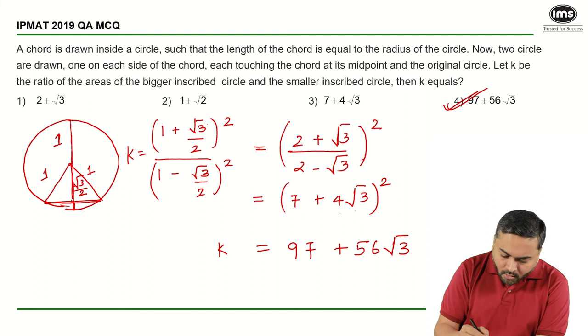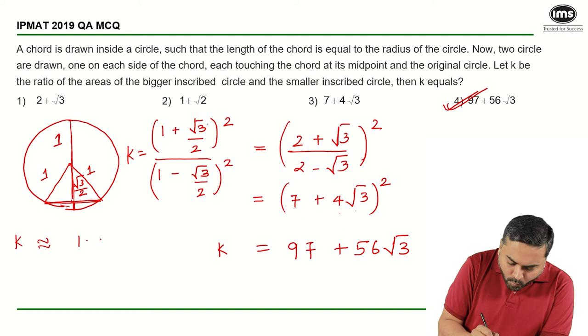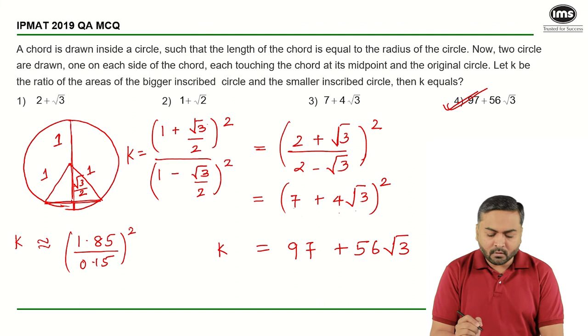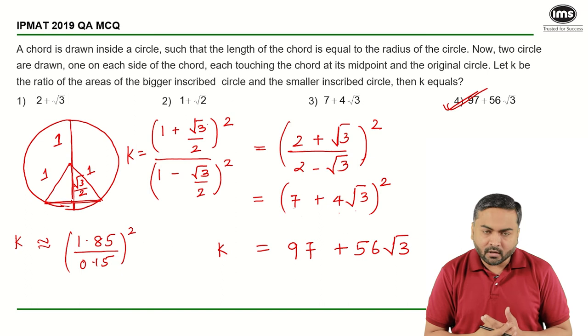Basically I can say that my k will be approximately 1.85 upon 0.15 the whole square. So 185 upon 15 is what I am looking at. 185 upon 15 will be more than 12, so 12 square is approximately my answer should be somewhere 144 somewhere nearby that.